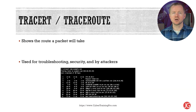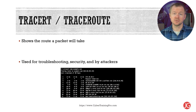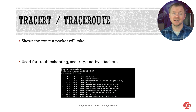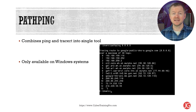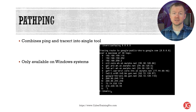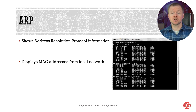Traceroute shows all the routers, also known as hops, between two different systems — Traceroute is the Linux equivalent command. Network administrators can use it for troubleshooting, security staff can identify where traffic is routing through, and attackers can use it to identify network appliances. PathPing combines ping and traceroute into a single tool and is only available on Windows systems. The ARP tool is related to the address resolution protocol — the command 'arp -a' will show all the MAC addresses your system knows about on the local network.